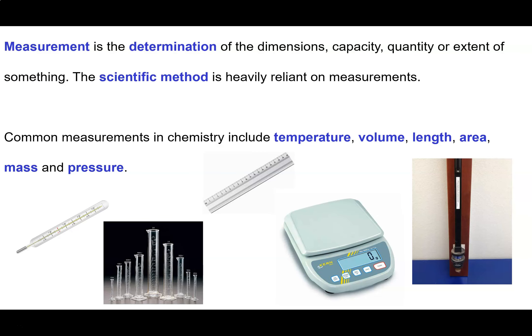Measurement is the determination of the dimensions, capacity, quantity, or extent of something, and the scientific method is heavily reliant on it. Typical measurements in chemistry include temperature, volume (the amount of space an object occupies, often applied to gases and liquids), length or height, area (the amount of surface something has), mass (the amount of material in an object), and pressure (force per unit area). A variety of devices are used for measuring these things.